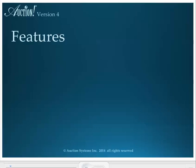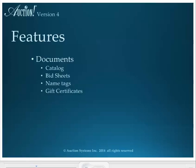Version 4 includes standard features of Version 3. If you're new to Auction Systems, these features include the ability to print many types of documents, such as a catalog of auction items, bid sheets for the items, name tags and mailing labels for invitees and donors, gift certificates, invoices for purchases made by your guests, and donor receipts for companies or individuals that make an item or cash donation to your organization, and many other documents.